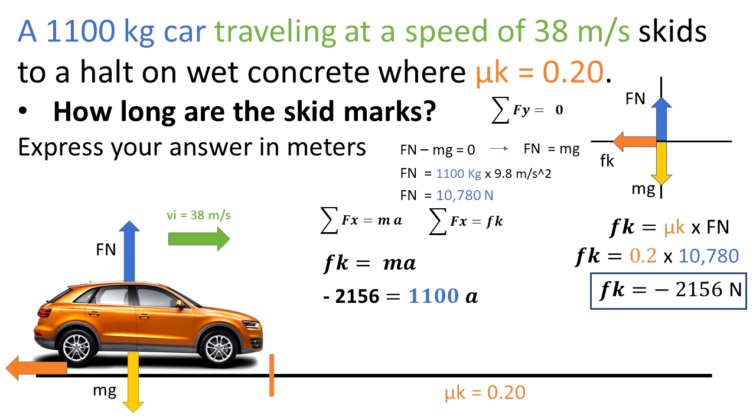Let's plug in the other equation. We have that negative 2,156 N is equal to 1,100 kg times acceleration. And we get that the acceleration is negative 1.96 meters per second squared.